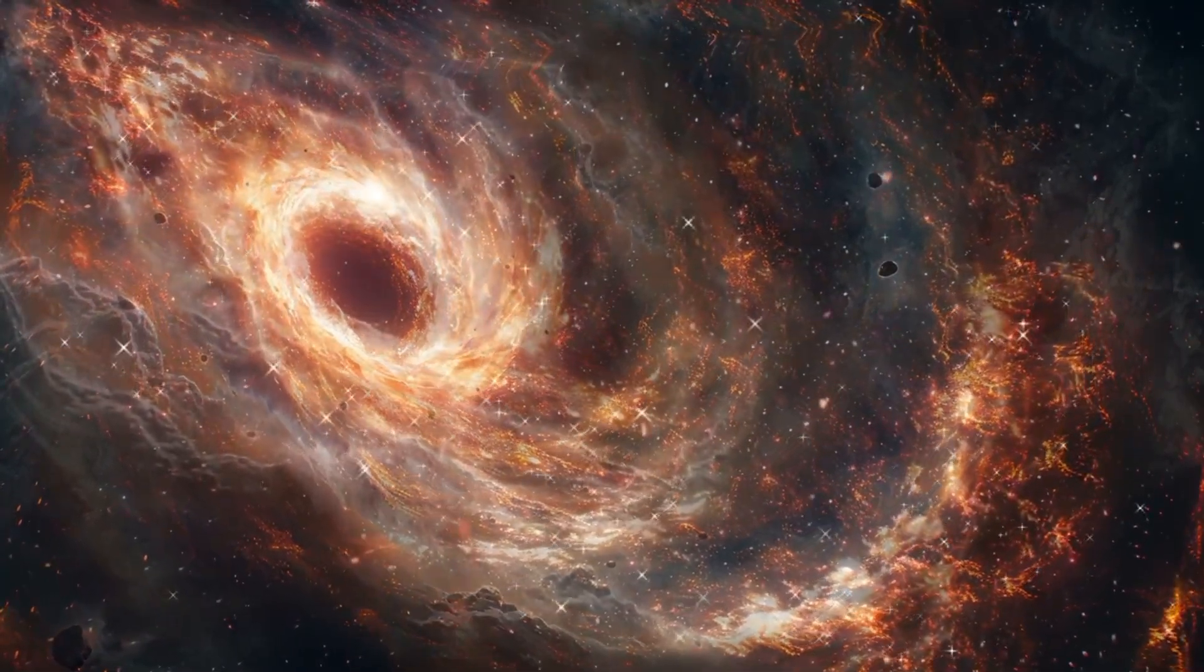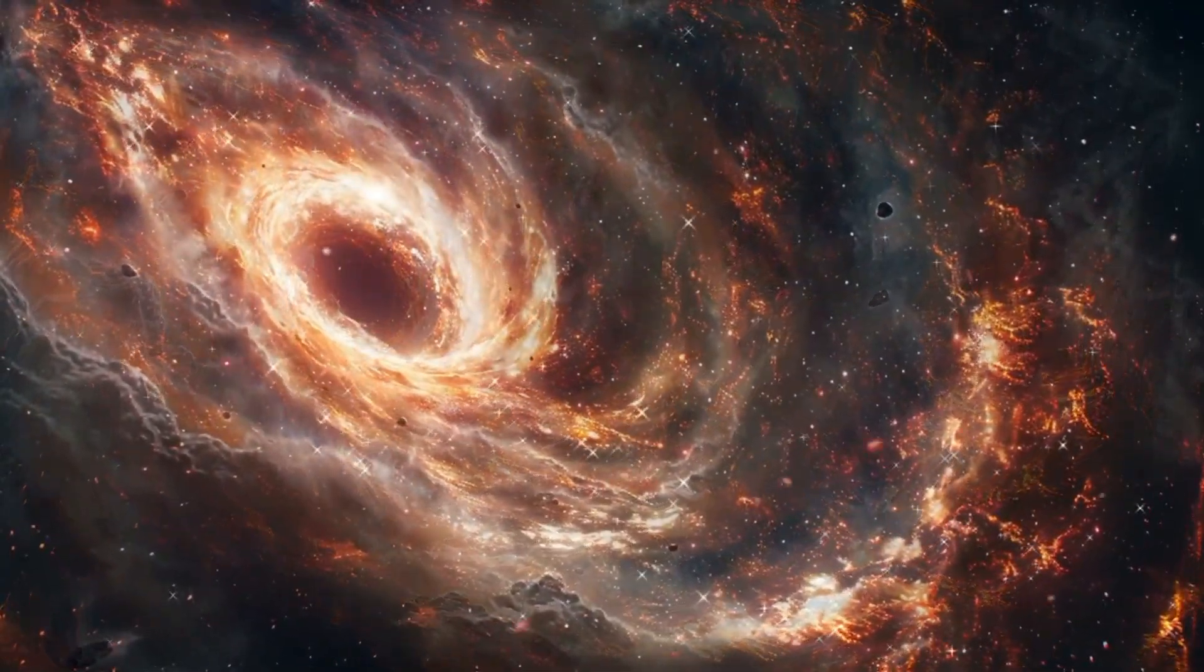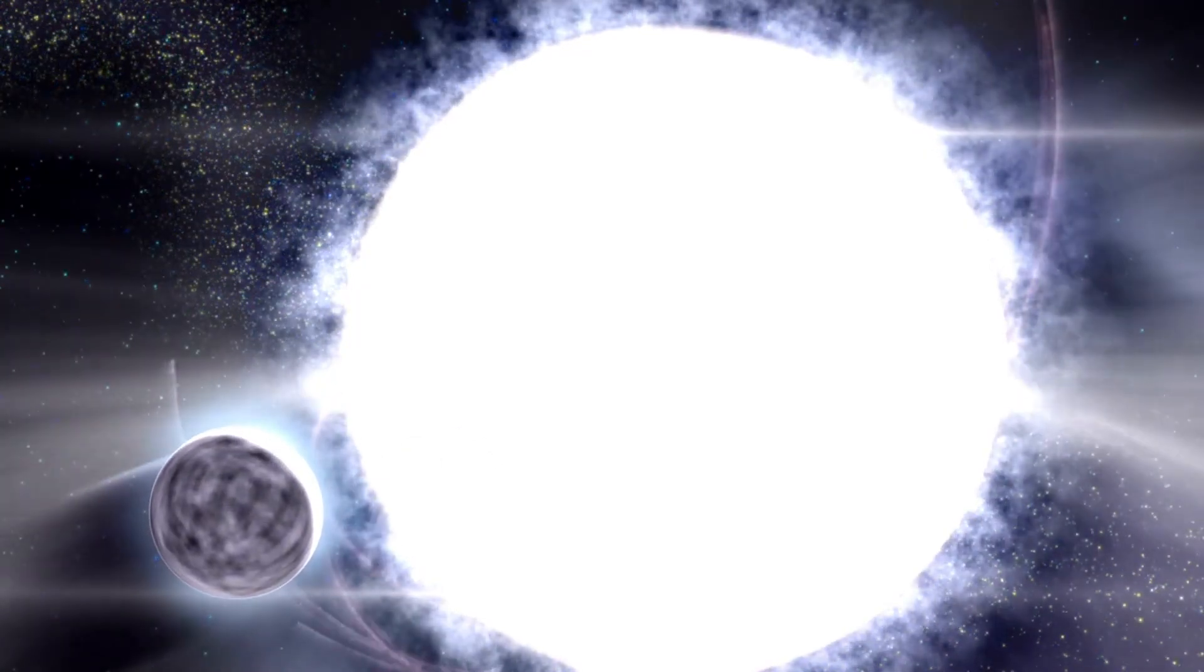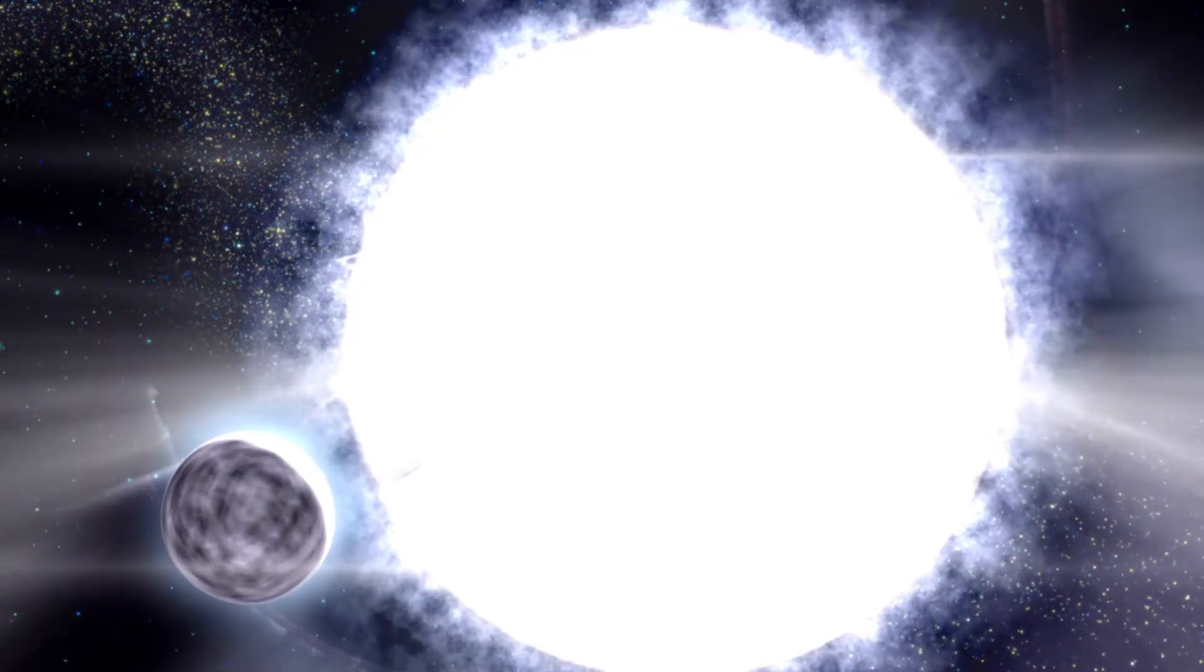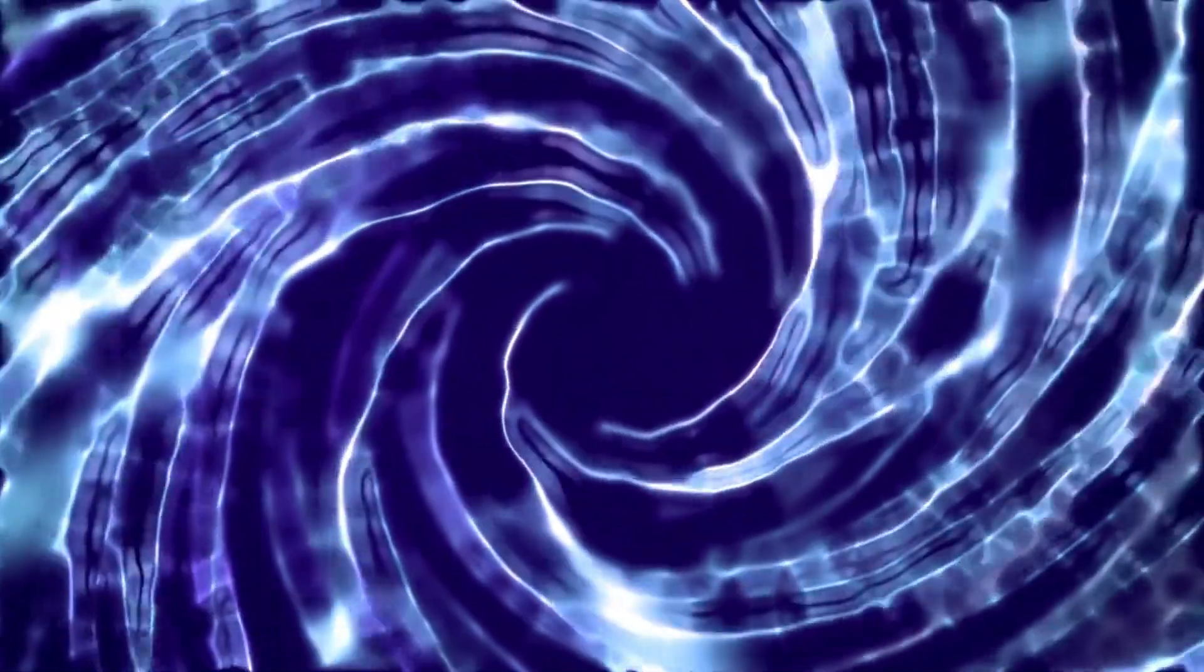So how do black holes come about? Picture this. Stars once bright and shining meet their fiery end in a massive explosion called a supernova. From the remnants of these fallen giants, black holes emerge. Most black holes form from massive stars that have reached the end of their life cycle in a supernova.